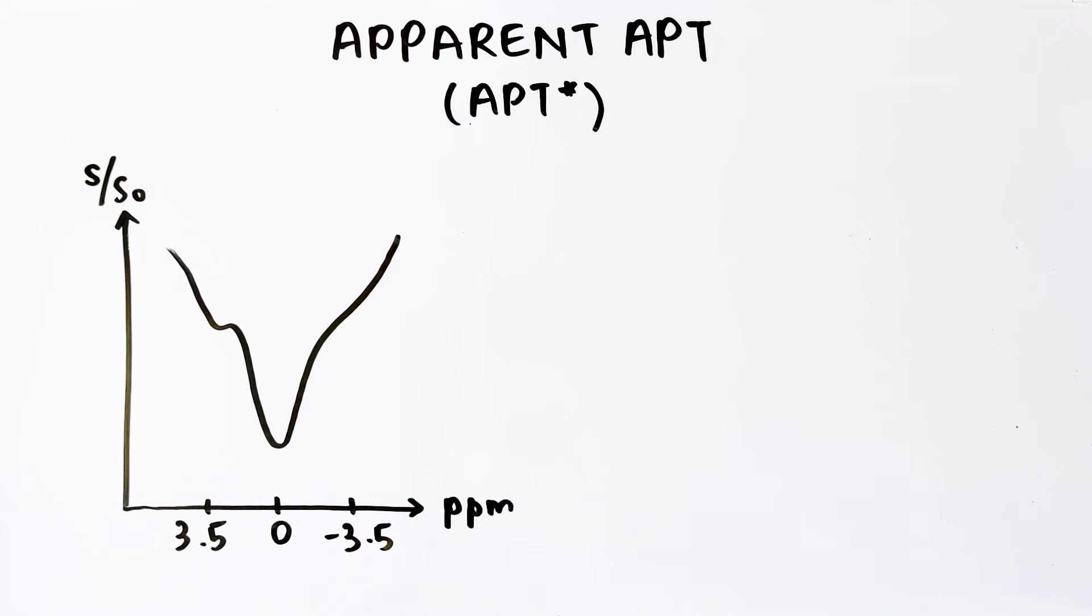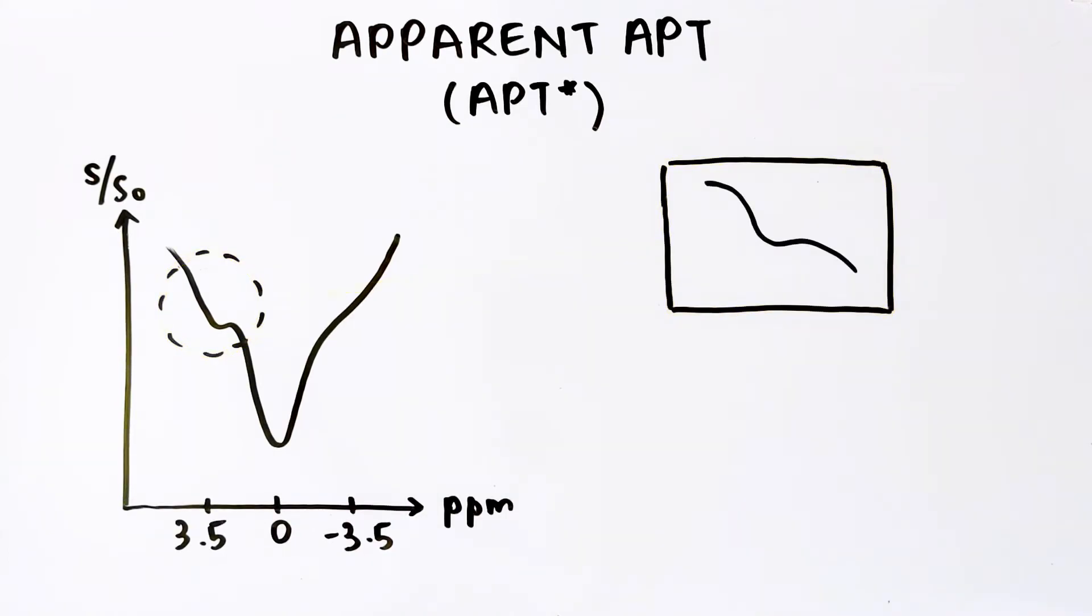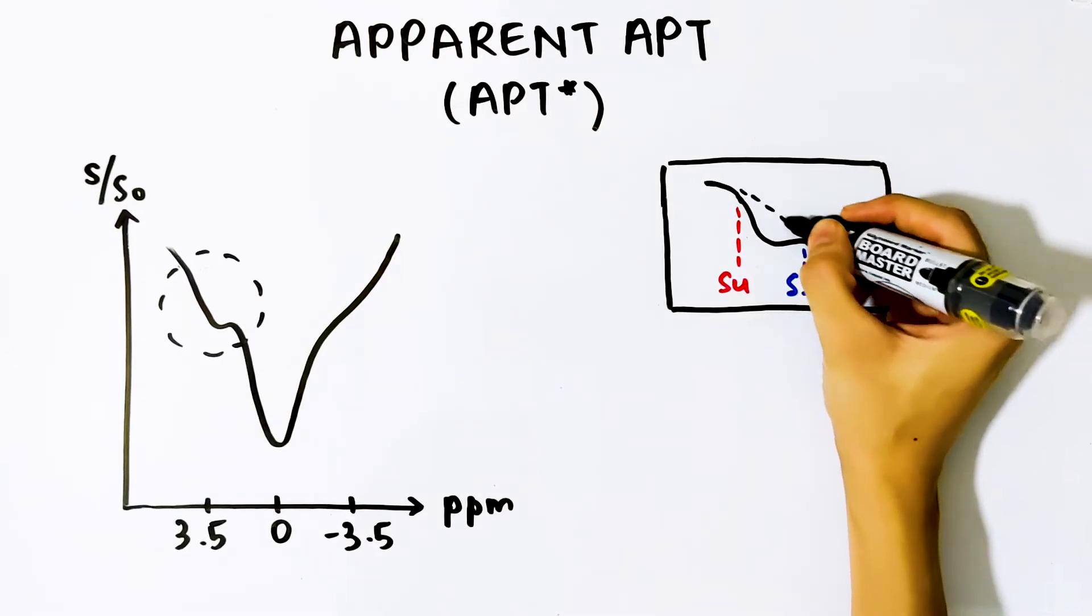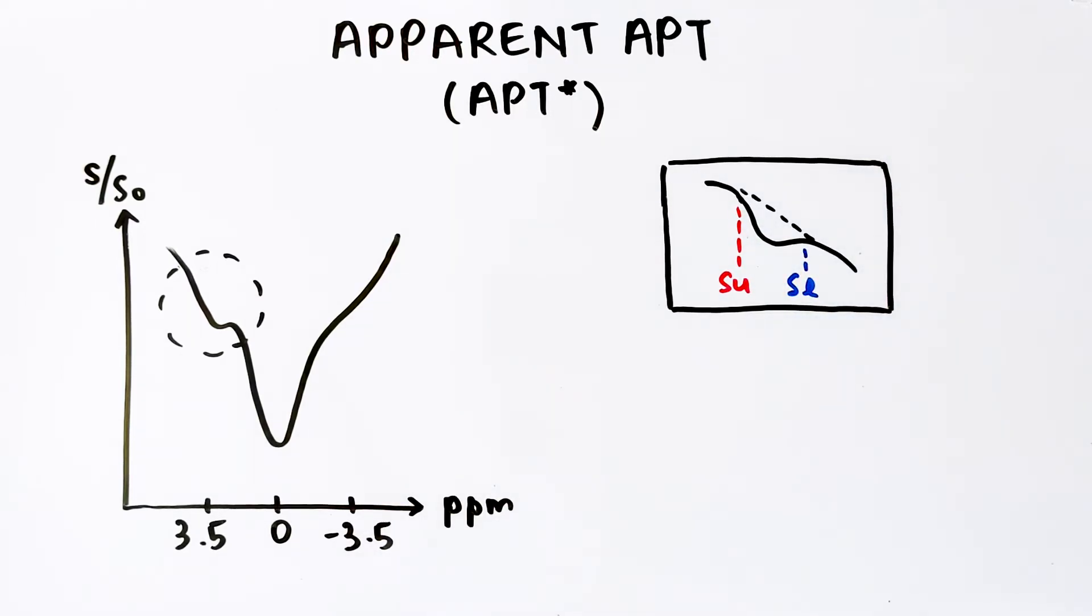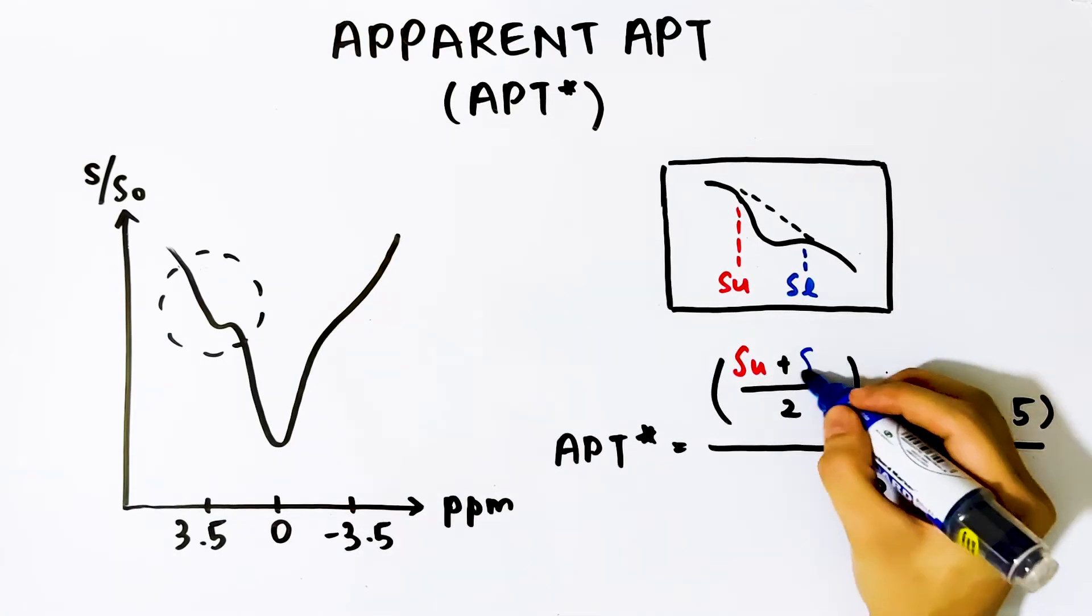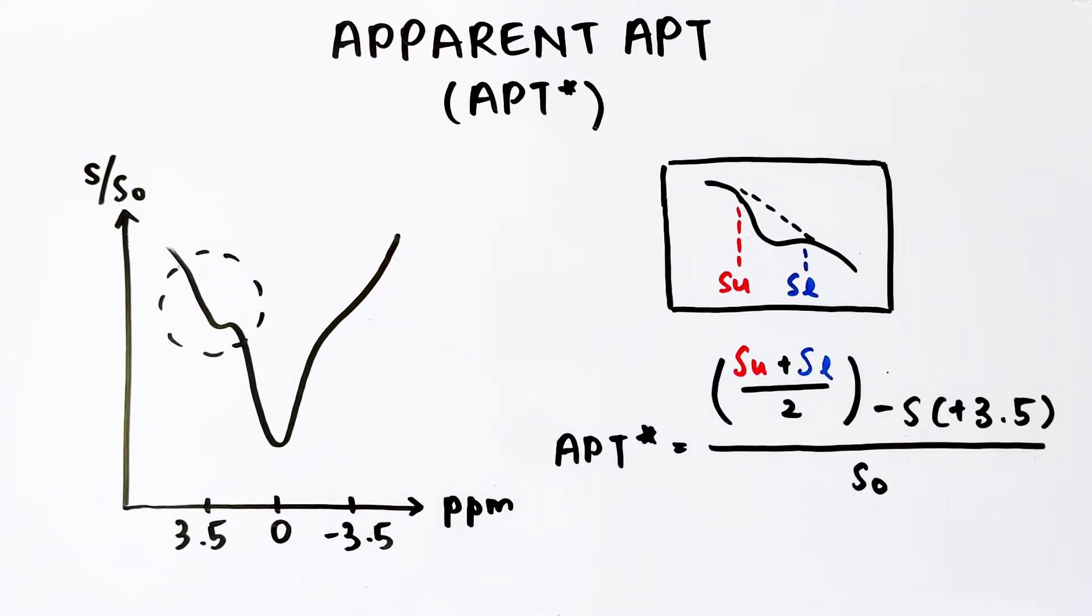To minimize these contaminants, the apparent APT, denoted as APT asterisk, may be considered. Firstly, observe the APT dip around 3.5 parts per million. Identify the upper and lower boundaries of the APT dip. All other effects except APT within these boundaries are assumed to approximate a linear function. Then, apparent APT is calculated similarly to MTR asymmetry but by using the averaged upper and lower boundaries as the reference signal instead.